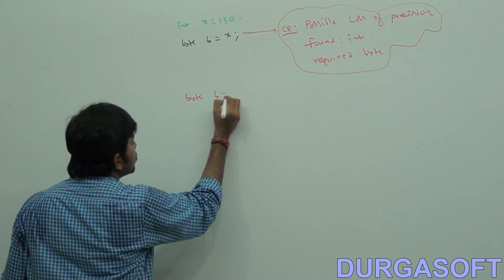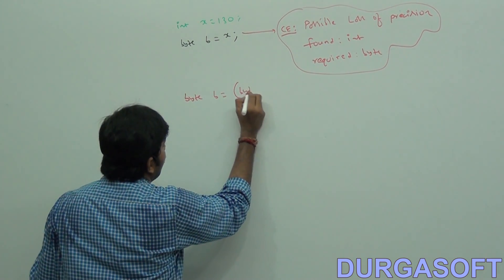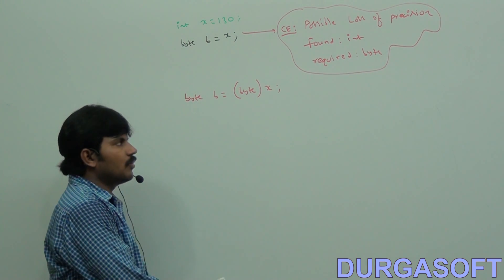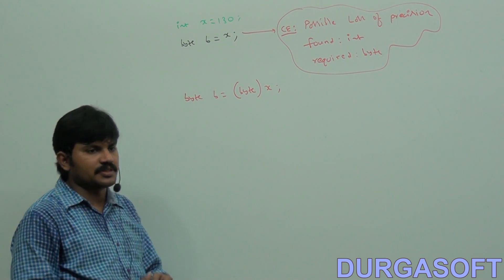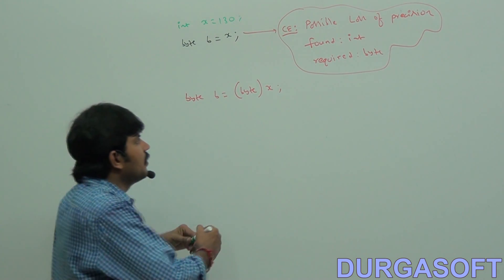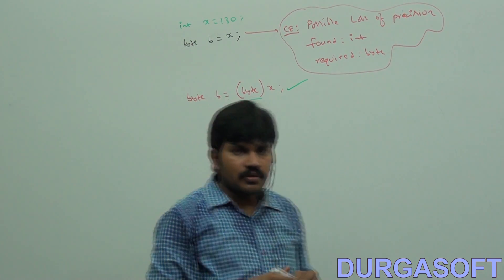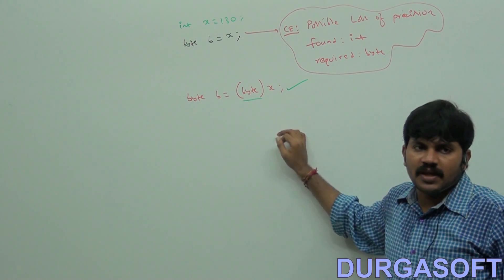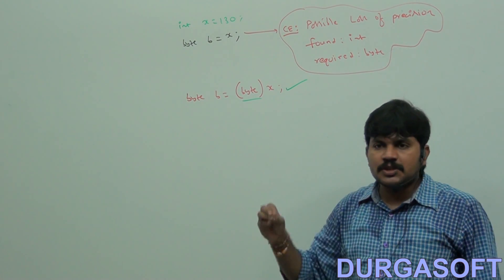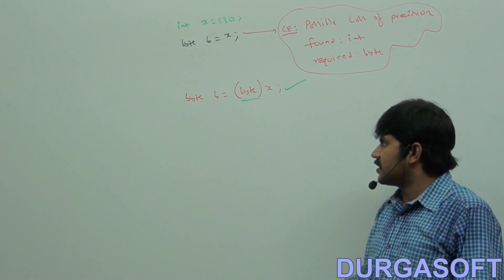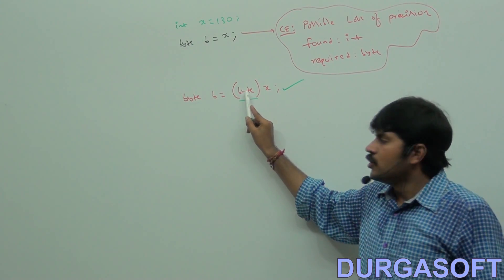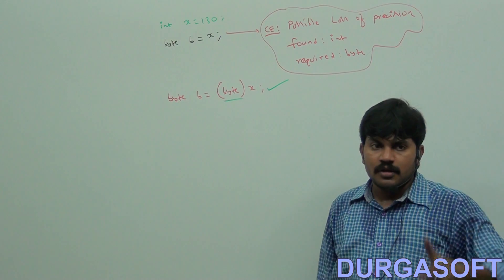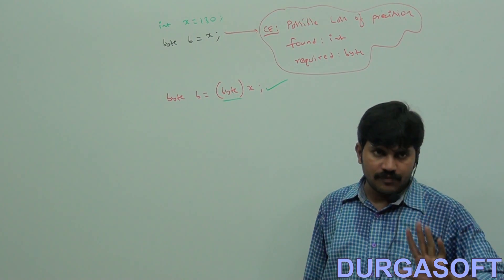How you can specify this? Write: byte b = (byte) x. Then immediately the compiler feels — oh, the programmer is taking care of loss of information, why should I worry? The code compiles fine. The typecasting performed explicitly by the programmer is nothing but explicit typecasting. It is required whenever we are assigning a bigger data type value to a smaller data type variable.